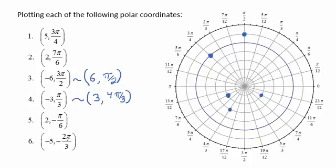Negative 5, negative 2 pi over 3. First rotate backwards 2 pi over 3. The negative radius will reflect about the origin. And we'll look at our point right here. Note that this is equivalent to the ordered pair, positive 5, pi over 3.